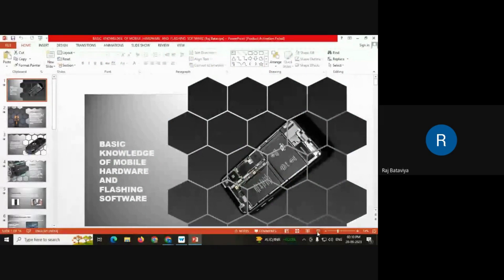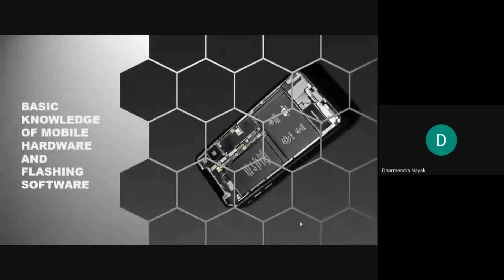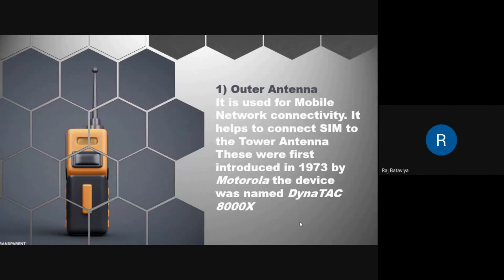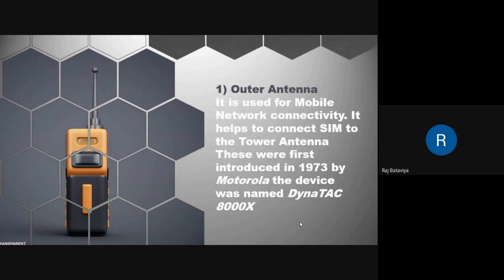Now visible. Okay, first one is the antenna. There are two types of antenna. One is the outer antenna — it is used for mobile network connectivity. It helps to connect the SIM to the tower. These antennas were first introduced in 1973 by Motorola. The device was named Dynatac 8000X.